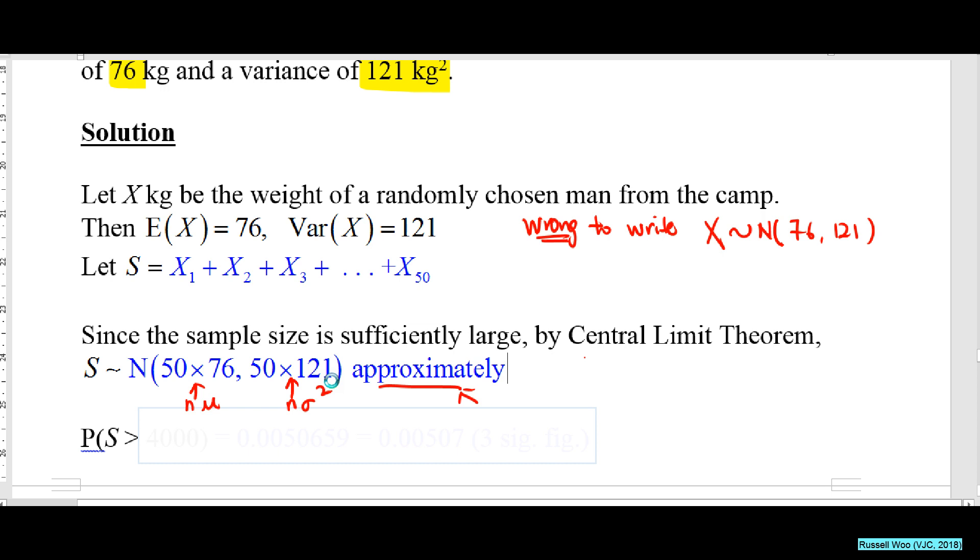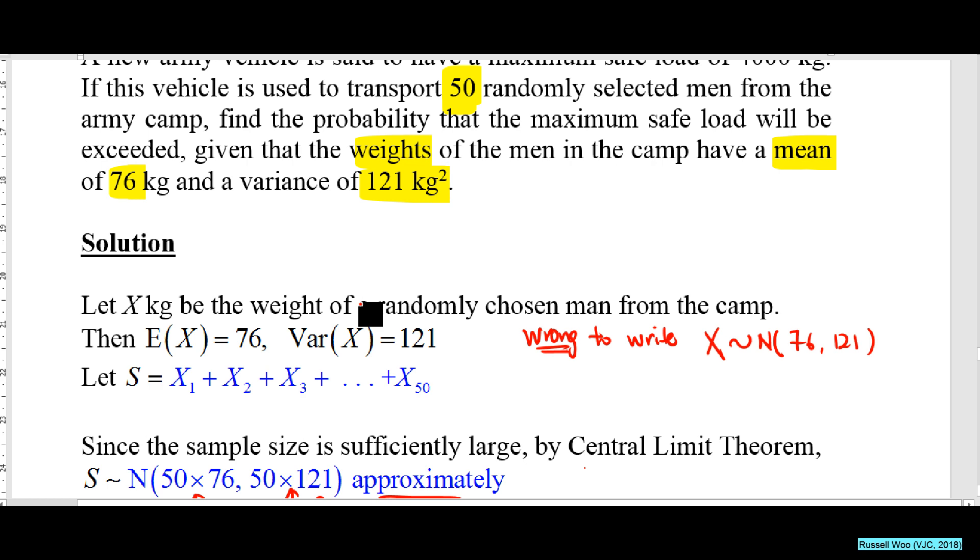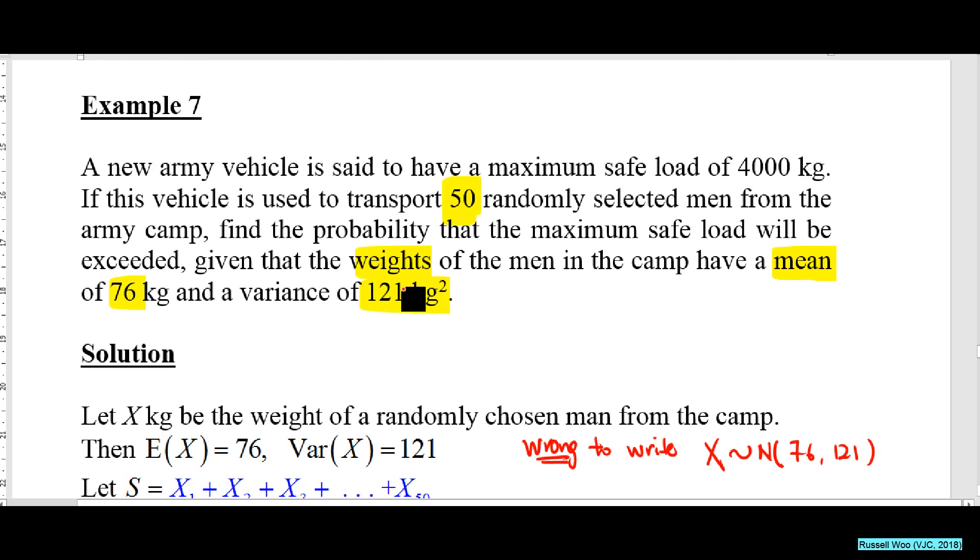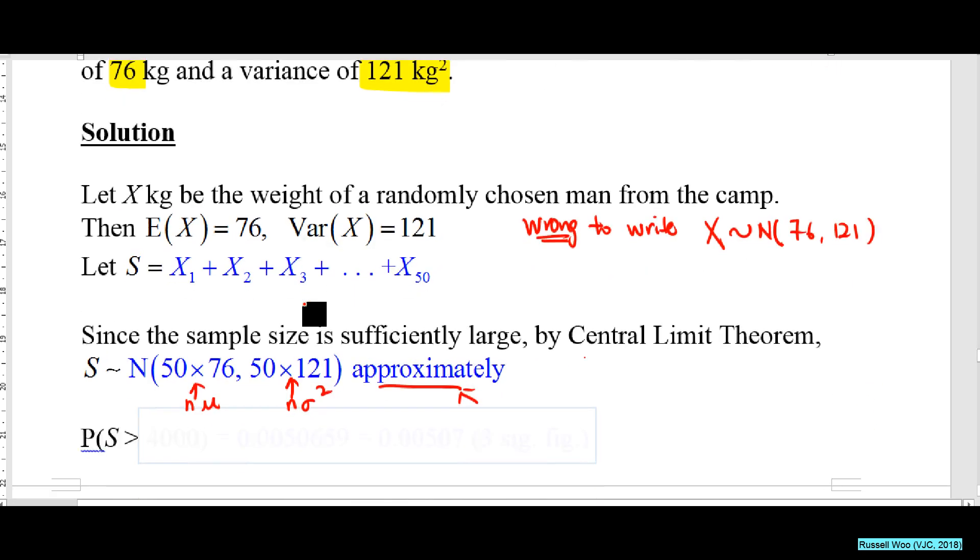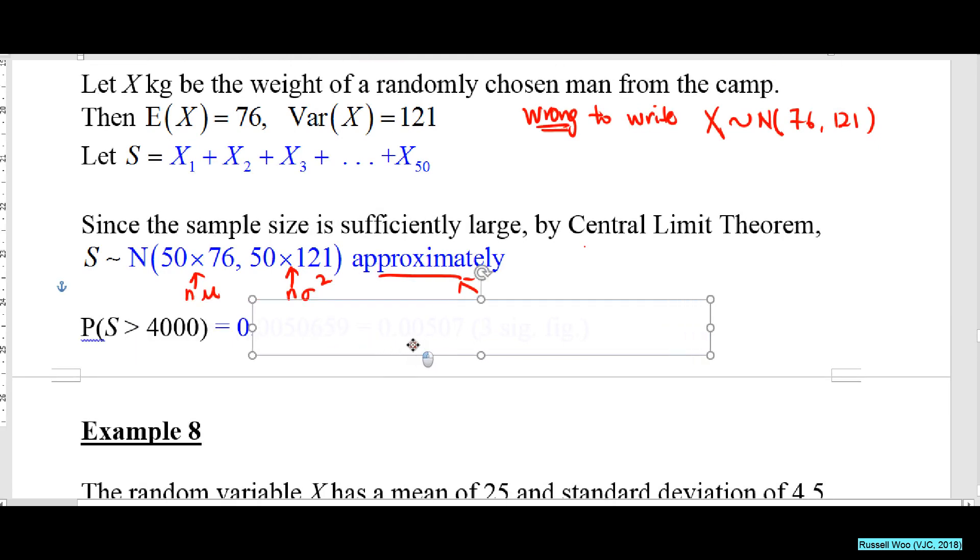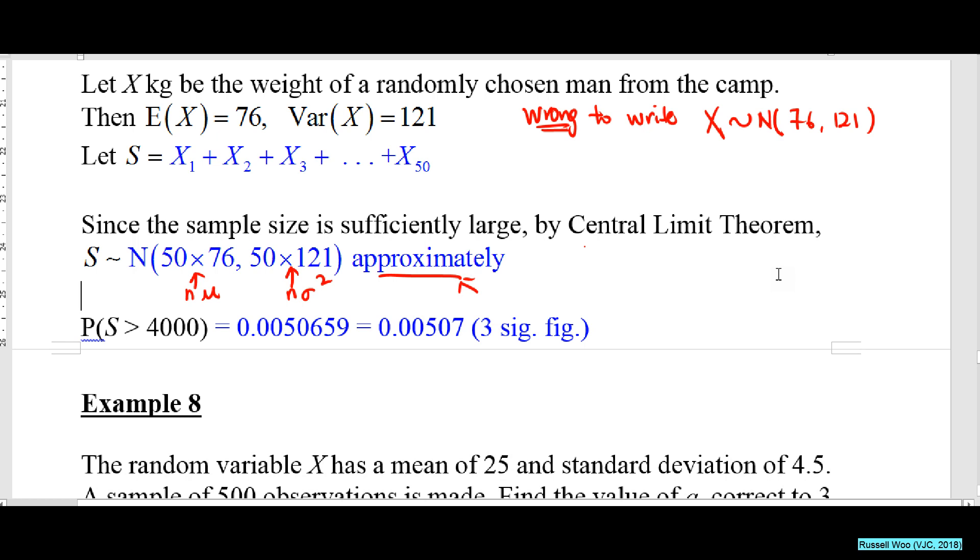All right, now you want the probability that S exceeds what? You want to find the probability that the maximum safe load will be exceeded. Maximum safe load is 4000, so you have probability S greater than 4000. I shall not waste time asking you to calculate, we can just press GC.